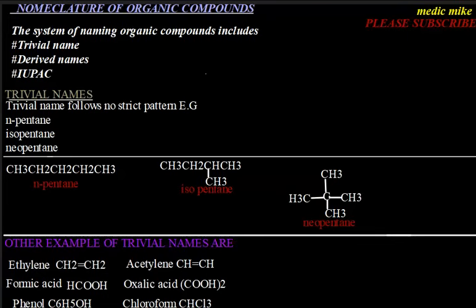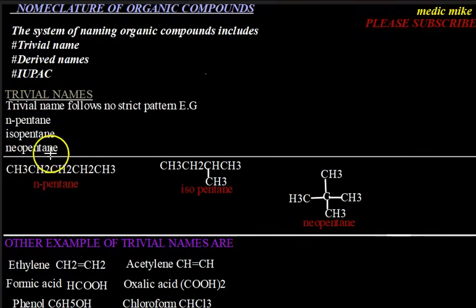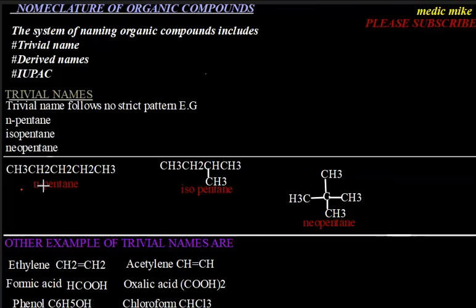Looking at a few examples of trivial names: number one, we have n-pentane. This is the condensed representation of n-pentane, and it has five carbon atoms and twelve hydrogen atoms. Its molecular formula representation is CₙH₂ₙ₊₂, which we get to know more about when studying alkanes.